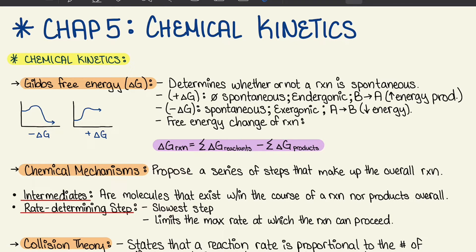Gibbs free energy determines whether or not a reaction is spontaneous. If we have a positive delta G value, we can determine that it's non-spontaneous and endergonic, and the reaction goes from B to A — a reverse reaction that ends with high energy products. Looking at the graph on the left, for positive delta G, it starts low and goes high. For a negative delta G value, it's a spontaneous reaction that gives off heat, so it's exergonic, favors the forward reaction from A to B, and ends with low energy products. The free energy change of a reaction is: delta G reaction equals the sum of delta G of reactants minus the sum of delta G of products.